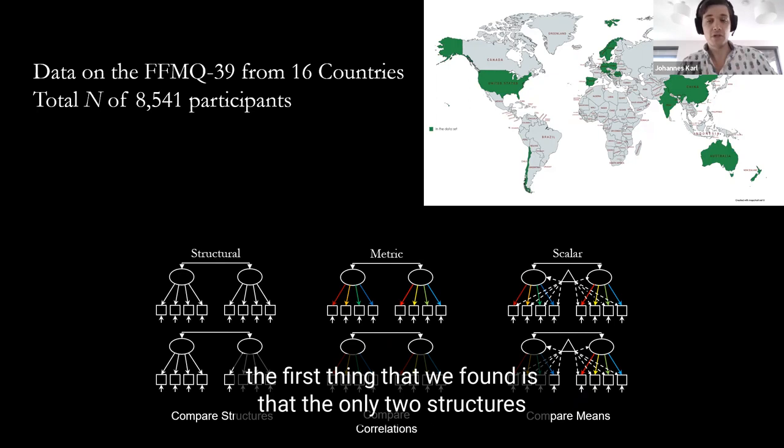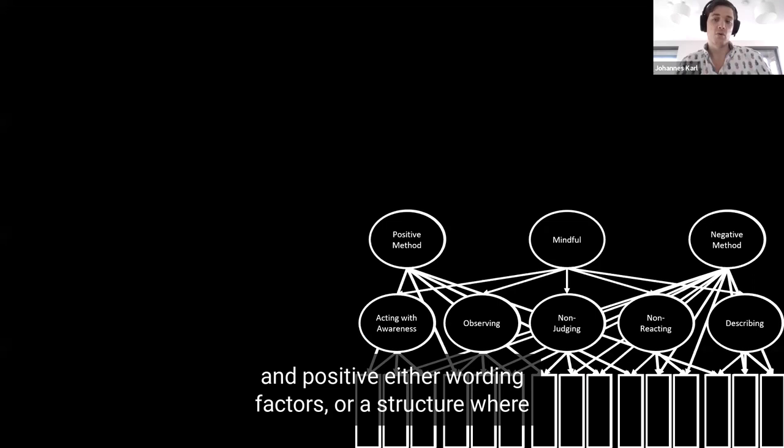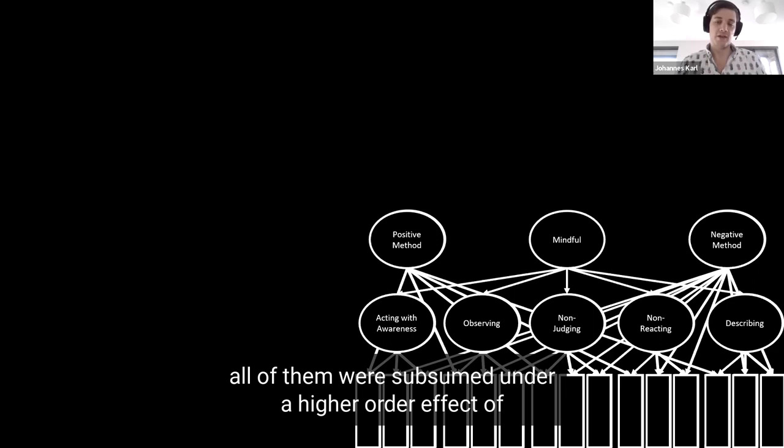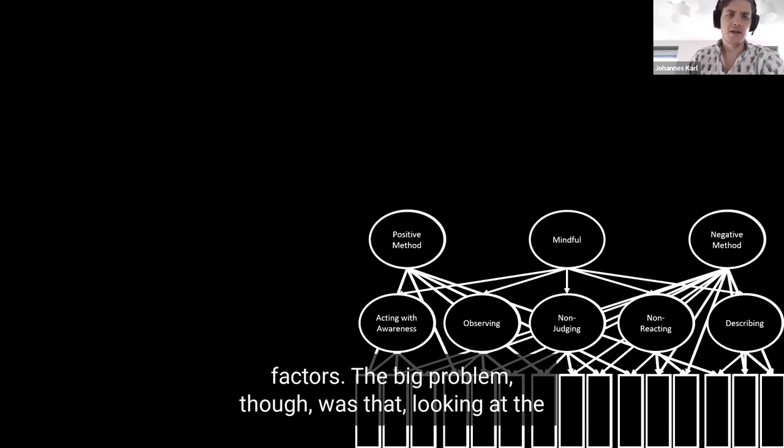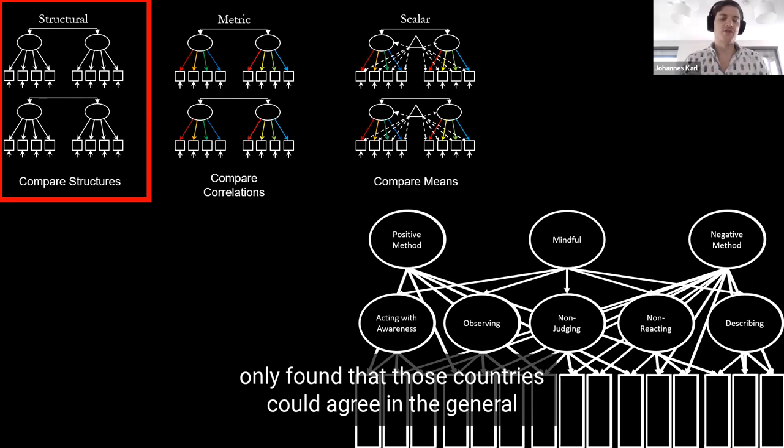The first thing that we found is that the only two structures that fitted well were a structure where either all variables were allowed to correlate but you had negative and positive item wording factors, or a structure where all of them were subsumed under a higher order factor of mindfulness but also included positive and negative methods factors. The big problem though was that looking at the comparability of the structure between those 16 countries, we only found that those countries could agree in the general structure but the loadings of the items varied significantly between the countries.